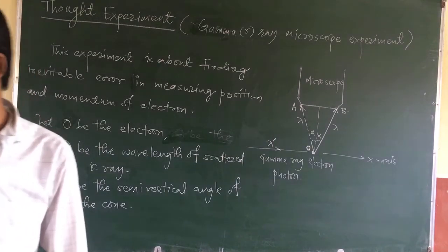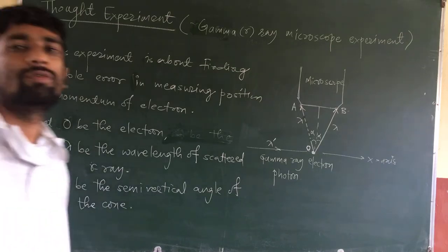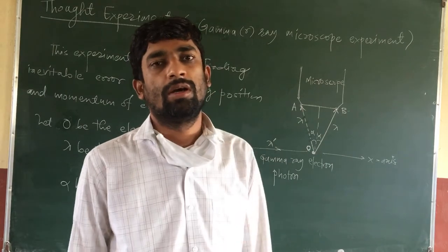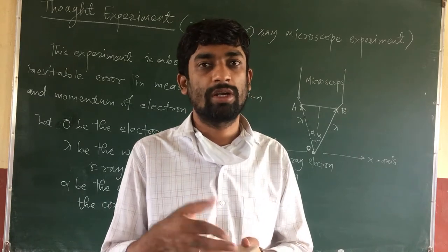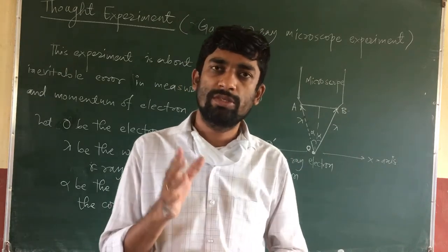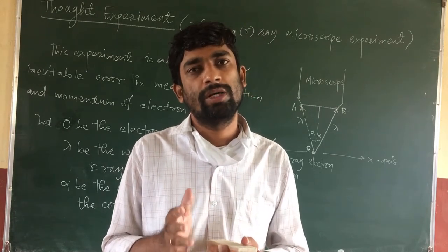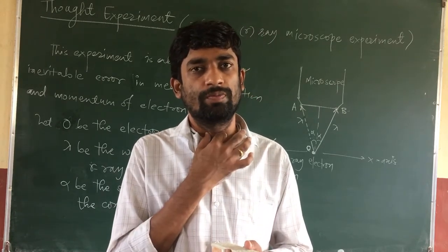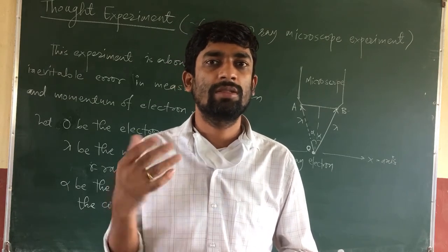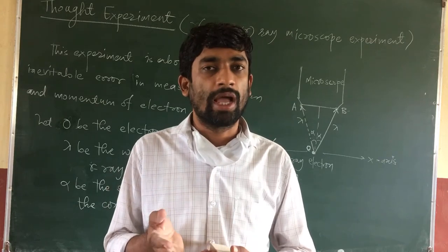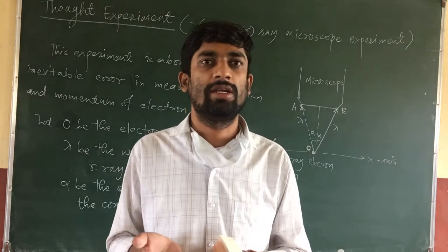Good afternoon students. Today we are going to learn about how you can prove the uncertainty principle by using a thought experiment. A thought experiment is a hypothetical experiment, and it is performed using a gamma ray microscope — that is why it is also known as the gamma ray microscope experiment. This idea was given by Bohr and adopted by Heisenberg.